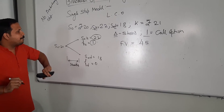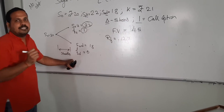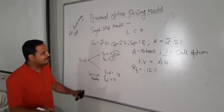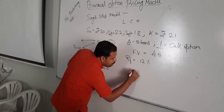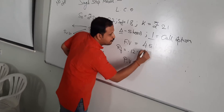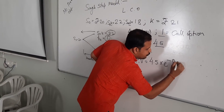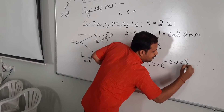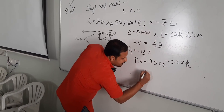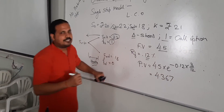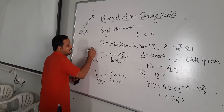We will assume the risk-free rate of interest is equal to 12%. Now we are supposed to convert this future value into the present value — that is, we have to move backwards and discount the future value. The present value of the portfolio must be equal to the future value of 4.5 multiplied by e raised to the power minus 0.12 multiplied by 3 upon 12, because the time period is 3 months. On solving this, we will get 4.367. So the present value from the future price movement is equal to 4.367.